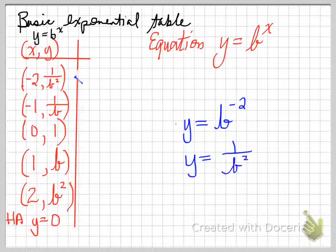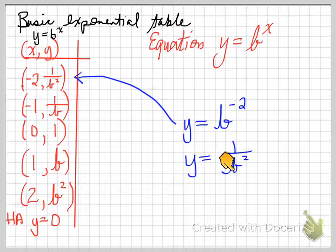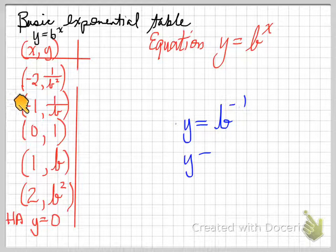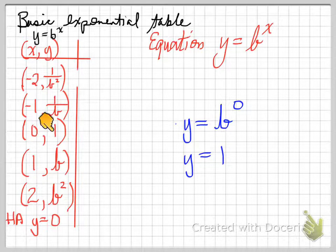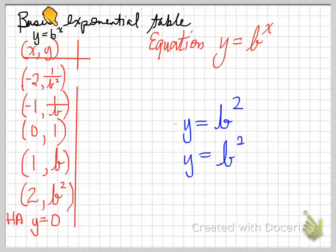Just recapping: b to the negative 2 means you flip the base — negative means flip the base — so it becomes 1 over b, all squared, giving 1 over b squared. Changing the exponent to negative 1 gives 1 over b. An exponent of 0 gives 1. An exponent of 1 gives b. An exponent of 2 gives b squared. Remember, you're substituting these x values into the equation to find the y values for the basic exponential table.